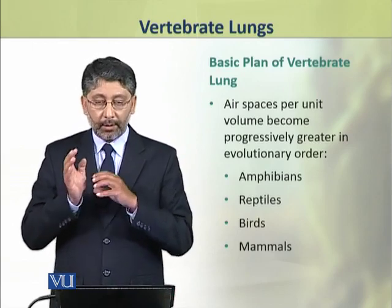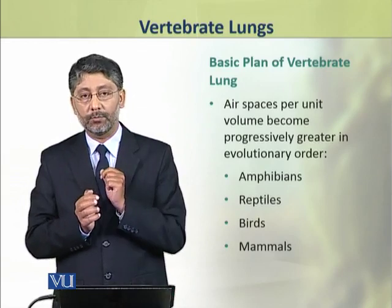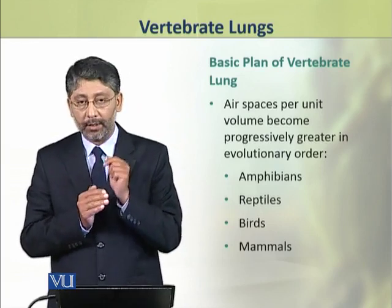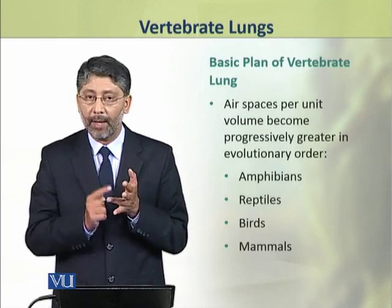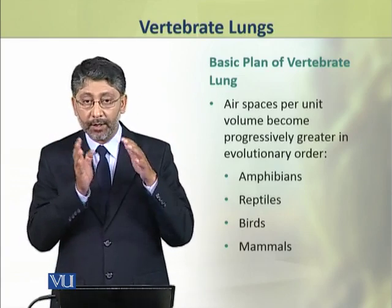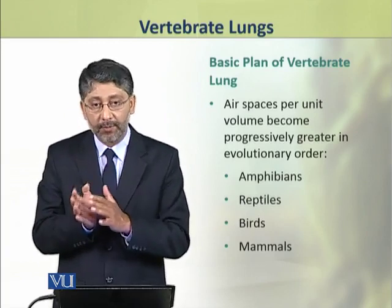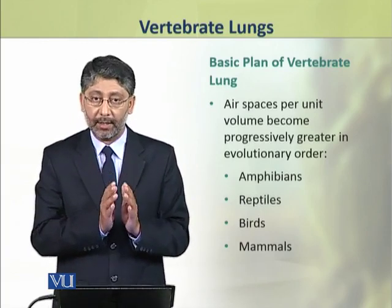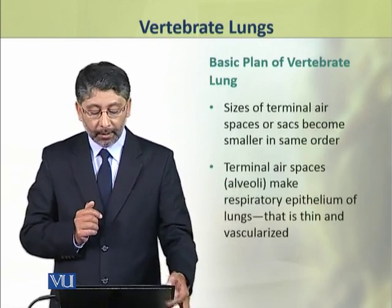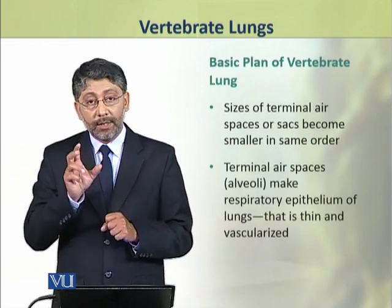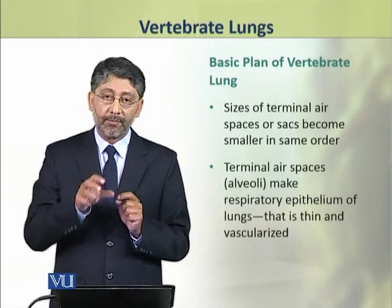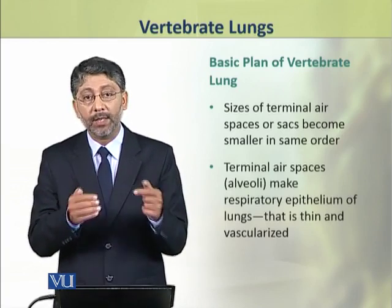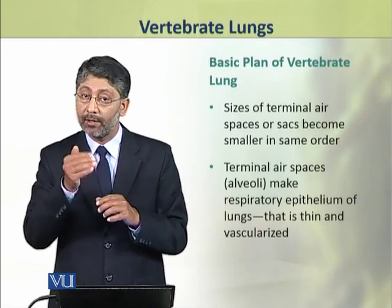The number of airspaces per unit volume becomes progressively greater in the evolutionary order: amphibians, reptiles, birds, and mammals — meaning airspaces per unit volume are fewest in amphibians and greatest in mammals. In contrast, the size of these terminal airspaces becomes smaller in the same order — airspaces in amphibians are larger in size, while alveoli in mammals are the smallest.